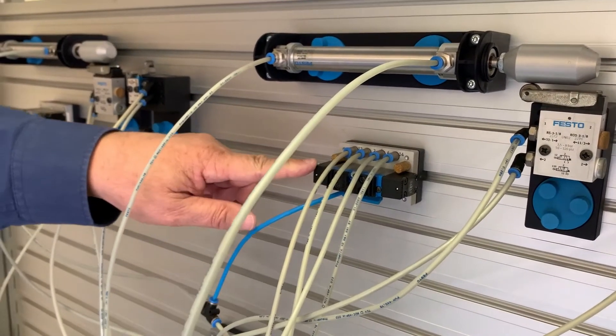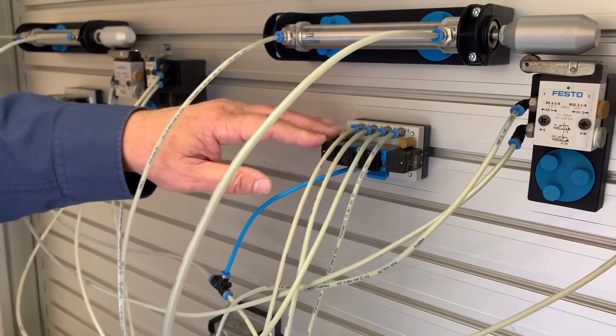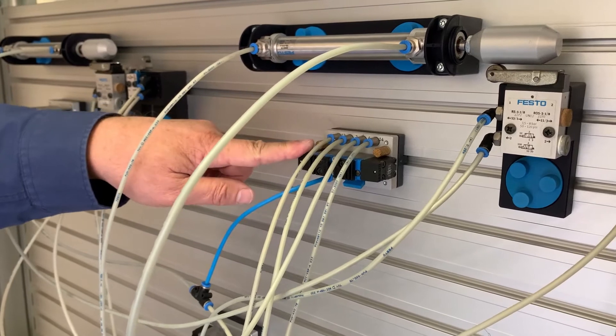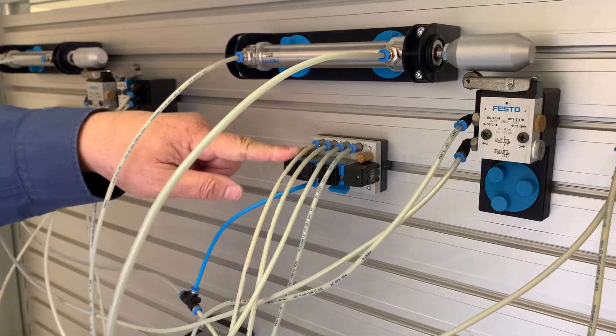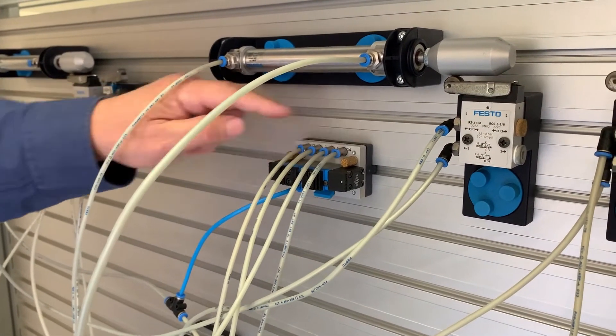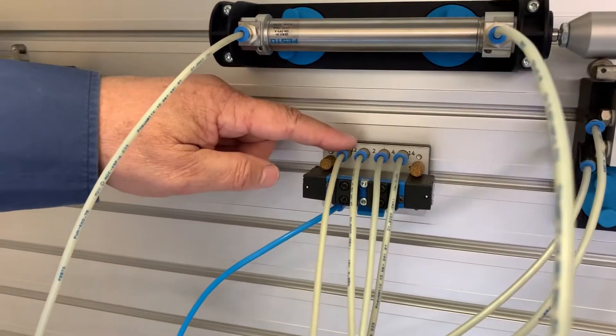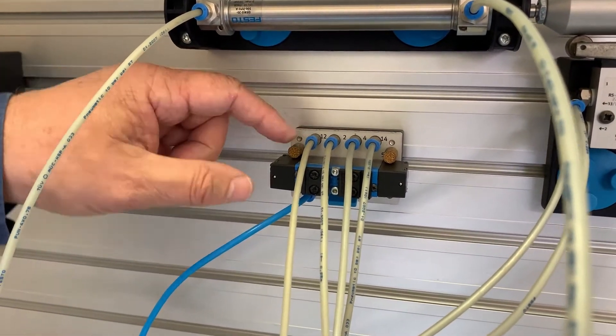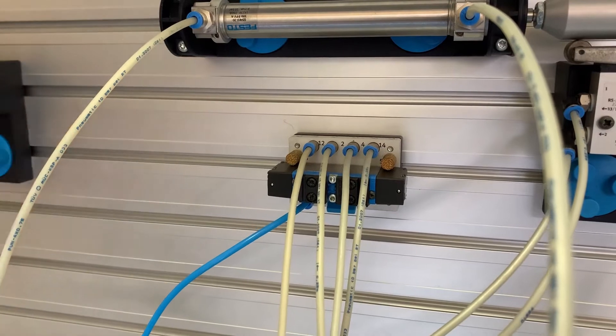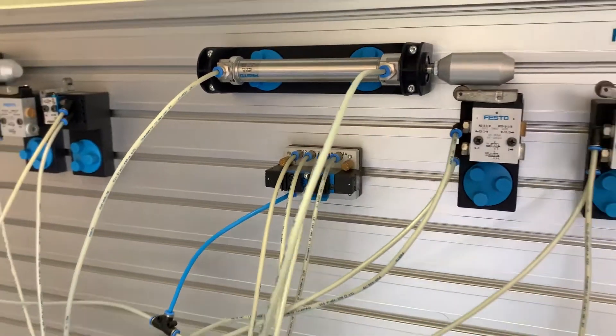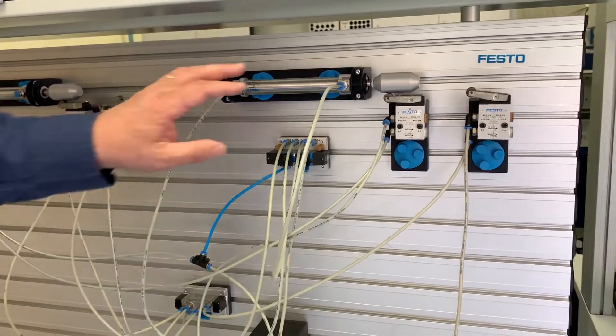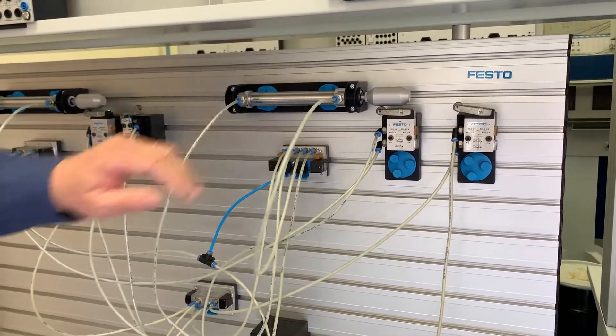Here's two of them and this is a pneumatic circuit so therefore it's piloted using an air supply and there's port 12 and port 14 which are your piloting ports. So when you put an air supply onto one of those two you're going to move the valve and that's going to switch the air supply through to the front or the back of the cylinder.